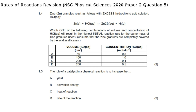Question 1.4: zinc granules react with excess hydrochloric acid. Which combination of volume and concentration of HCl gives the highest initial reaction rate for the same mass of zinc granules? Since there is excess HCl, the number of moles is not critical. For the initial reaction rate, only concentration matters, so we choose the HCl solution with the highest concentration — option B.